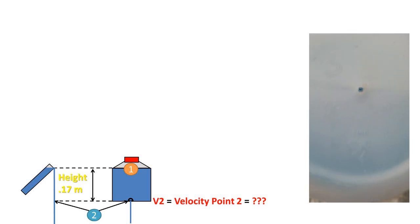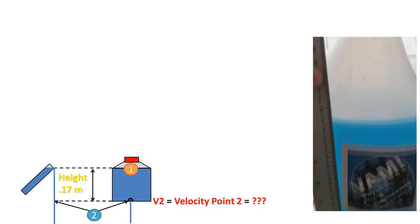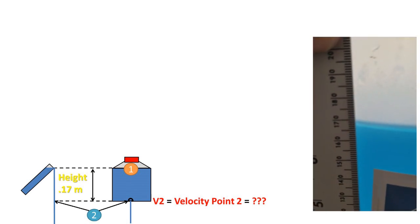We have a jug filled with water with a hole in the bottom of the jug. The height of the water line from the hole at the bottom is 0.17 meters.